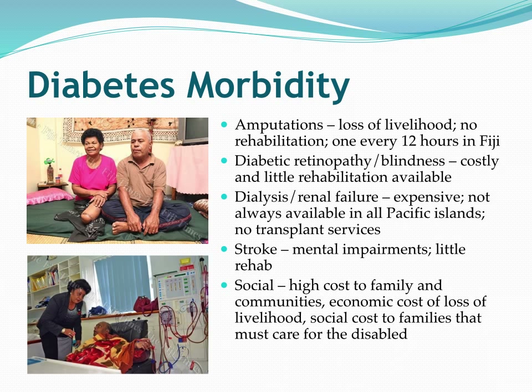This all comes down to a high social cost — a high cost to the family and the community from having an impaired or deceased individual, which comes along with economic cost as well. There's also the social cost to families who need to care for disabled individuals.